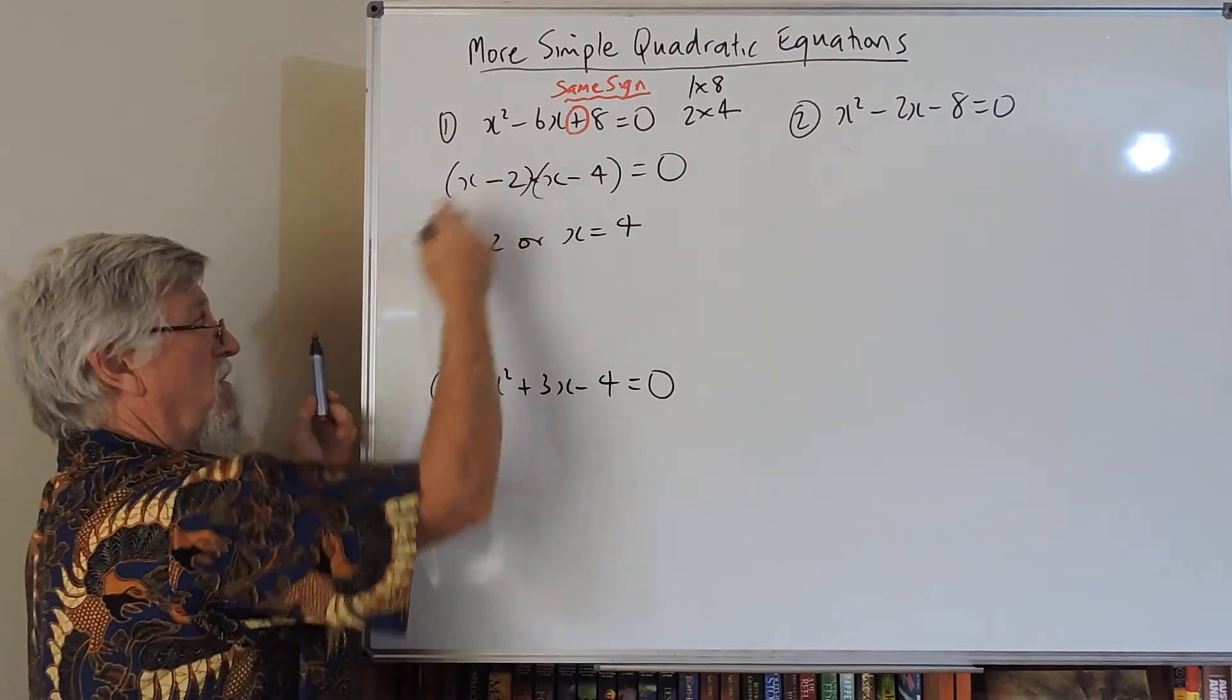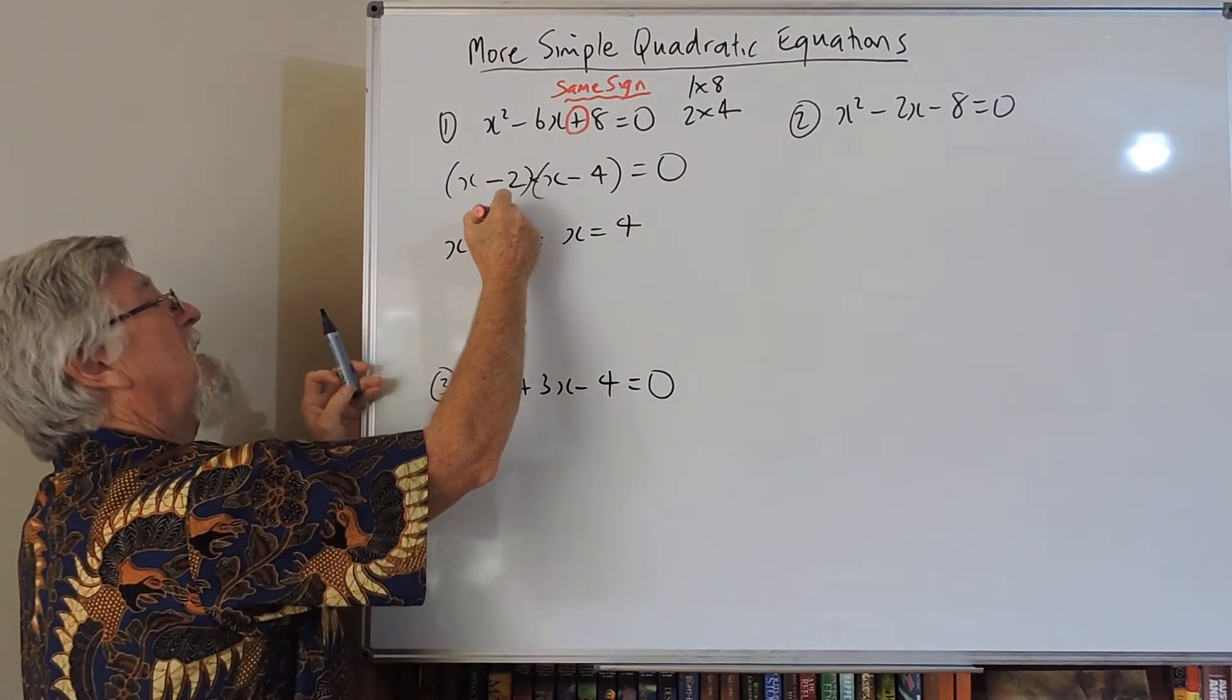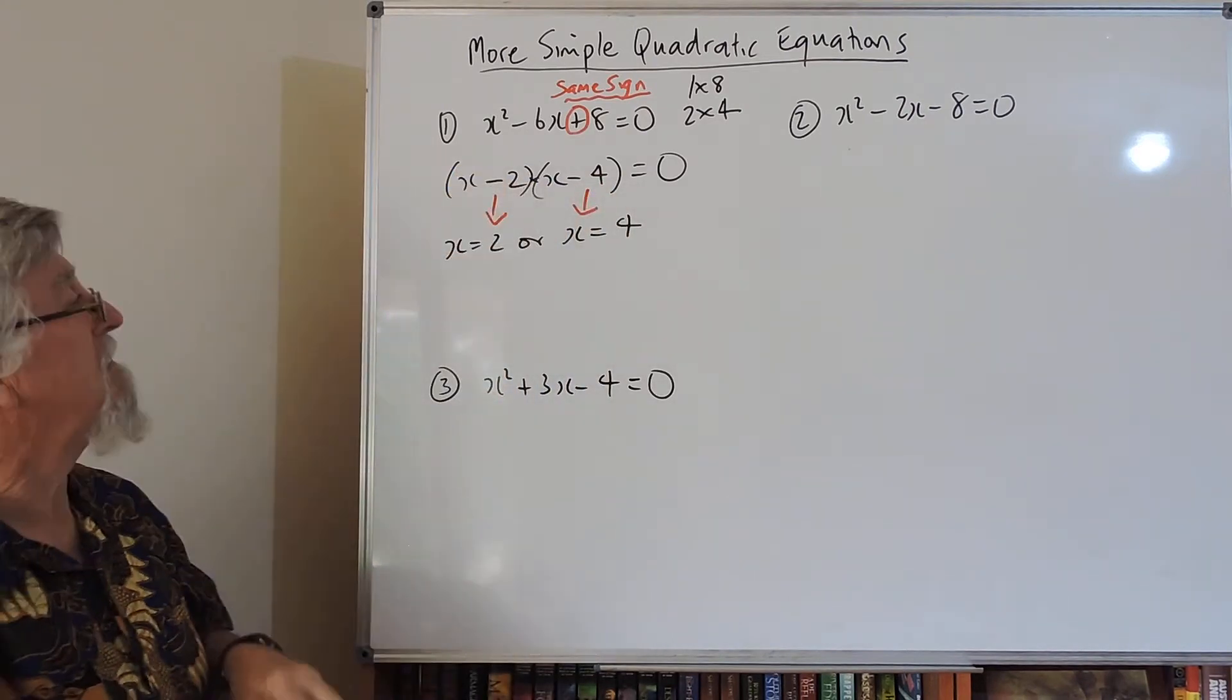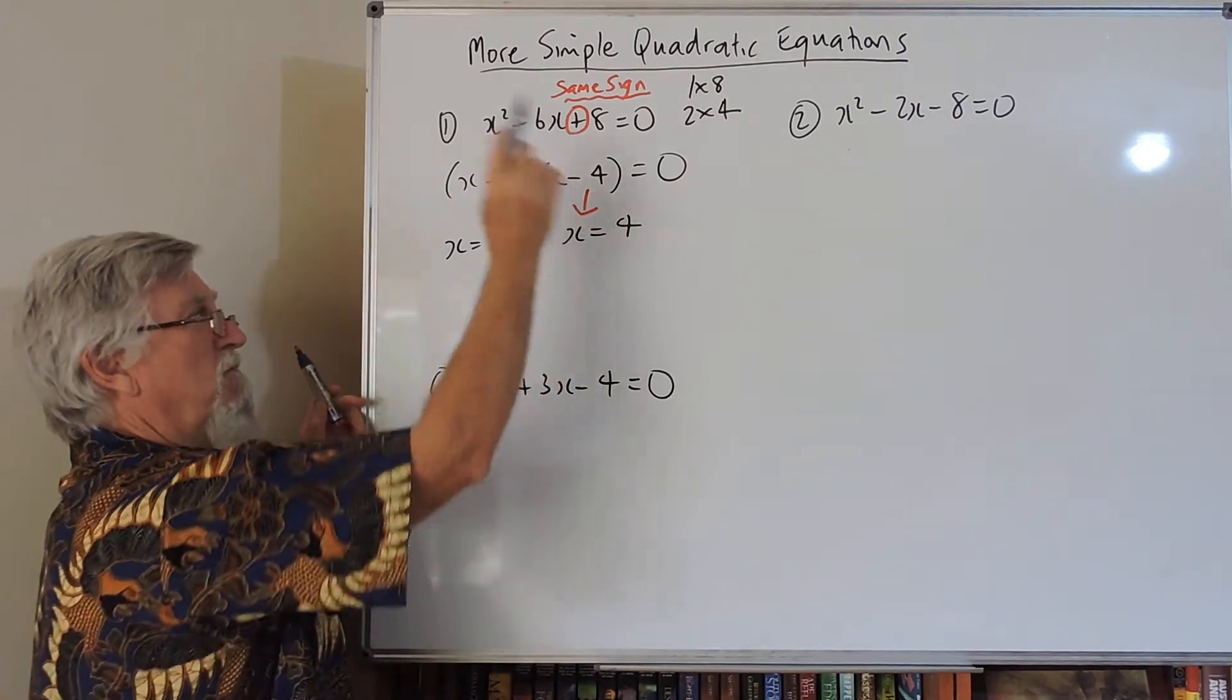So the shortcut is to write the opposite of that number there. It only works though if this is a 1. So I've got two possible answers that would make that true.